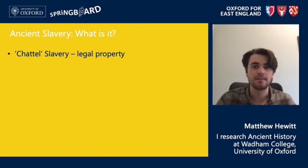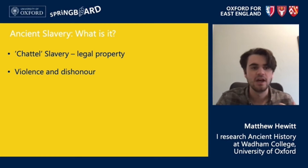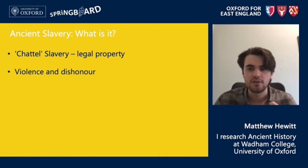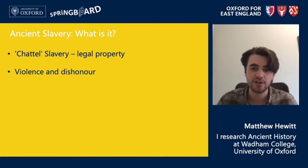Although this is useful as an identifier and it's often the way in which enslavers perceive the relationship, it's not particularly informative about the experience of slavery. That's why there are other ways of thinking about slavery which focus on it as a social relationship — it's often emphasised that slaves are subject to routine acts of violence and dishonour and are deprived of all family relationships.